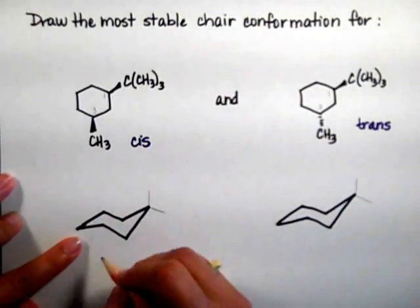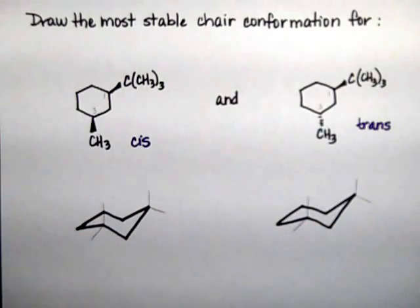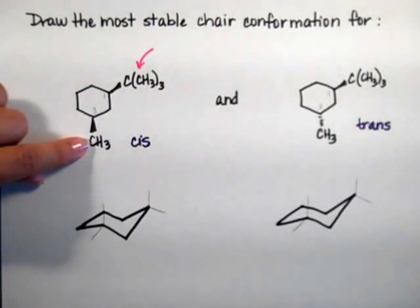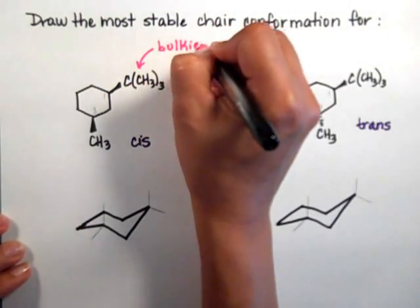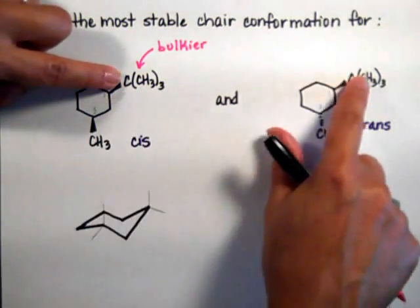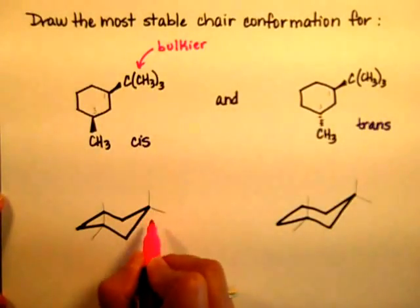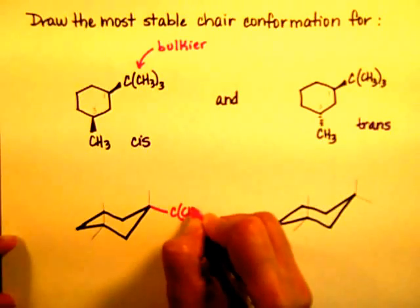On the cis isomer, I want the most stable conformation right away. I'm going to check which one is the biggest group — the tert-butyl group or the methyl. Obviously the tert-butyl is bigger and bulkier. Bulkier substituents do much better on equatorial positions, so I'm going to put my bulkiest group on the equatorial position first. The equatorial position on this carbon happens to be going down. I'm not thinking about axial or equatorial yet — that's coming, but not yet.